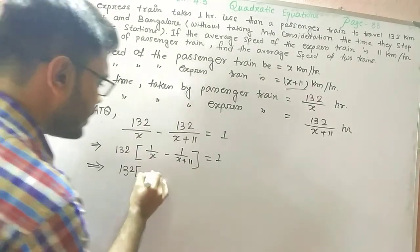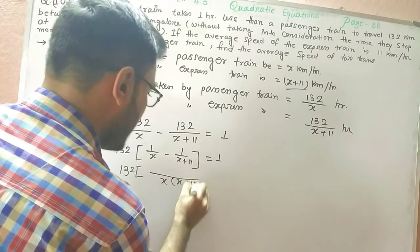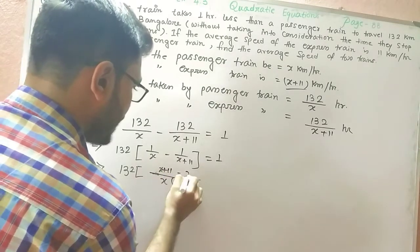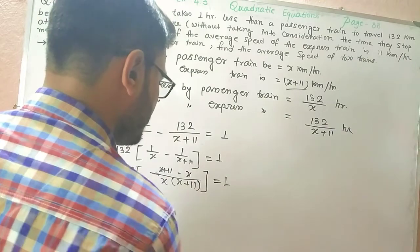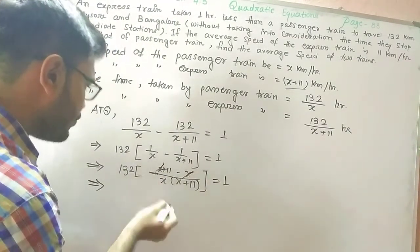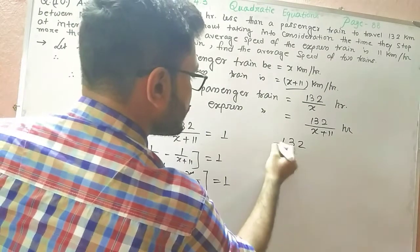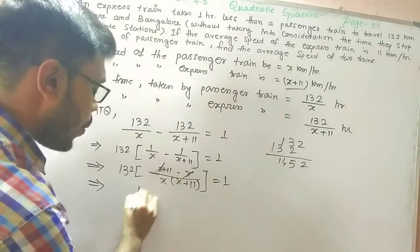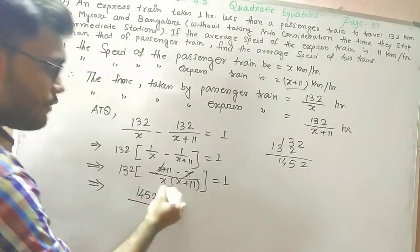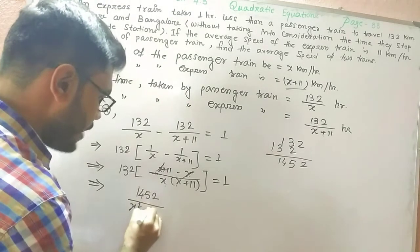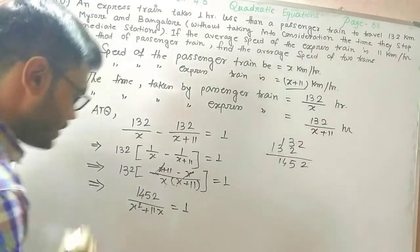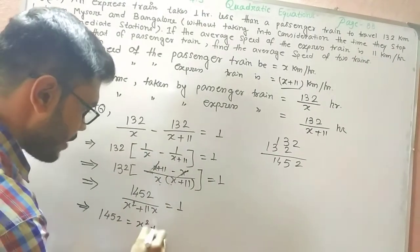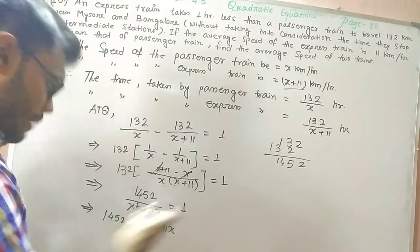If we find the LCM here, it would be: 132 times (x+11 minus x) over x(x+11) equals 1. Here x and x cancel out, so we get 132 times 11 over x(x+11) equals 1, which gives us 1452 over x(x+11) equals 1. Multiplying the denominator across: x squared plus 11x equals 1452.